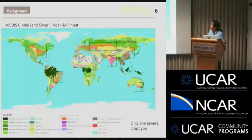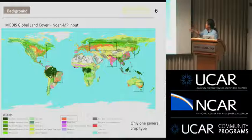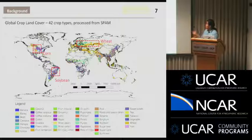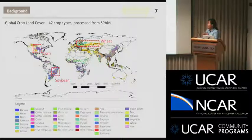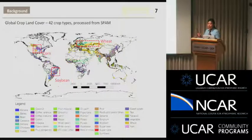The MODIS global land cover used as input for most land surface models and WRF has only one cover type for crops. The model knows where there is crop, but doesn't know which crop it is. We processed a new global crop cover map with 42 crops. In the U.S., it's majorly covered by corn; in Brazil, soybean; in Russia, mostly winter wheat. Corn, soybean, and winter wheat are very different in terms of growing season and peak LAI values.